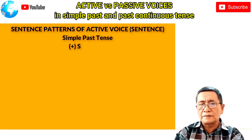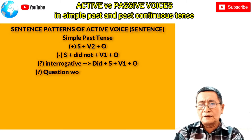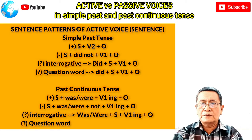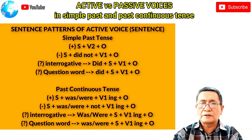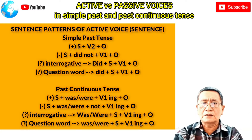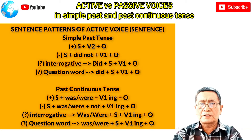After looking at the examples, I would like to explain how to make active and passive sentences based on sentence patterns. Sentence patterns of active voice in simple past tense: positive — subject + verb 2 + object; negative — subject + auxiliary 'didn't' + verb 1 + object; interrogative — 'did' + subject + verb 1 + object. For questions with question words such as where, what time, how, when, etc., you add the question word before 'did'.